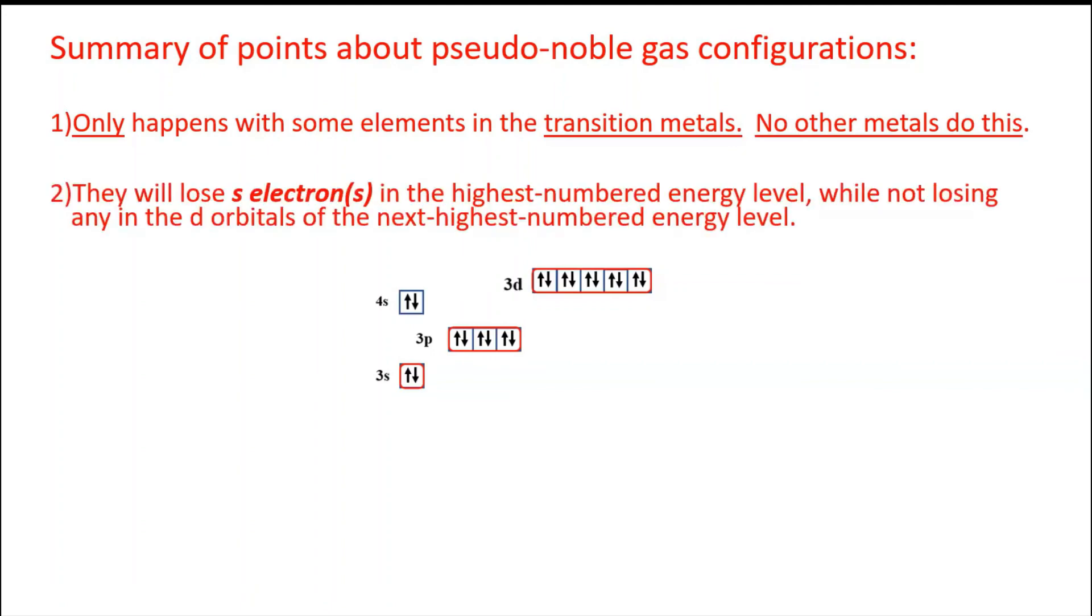Secondly, they will lose s electrons in the highest numbered energy level while not losing any of the d orbitals of the next highest numbered energy level.